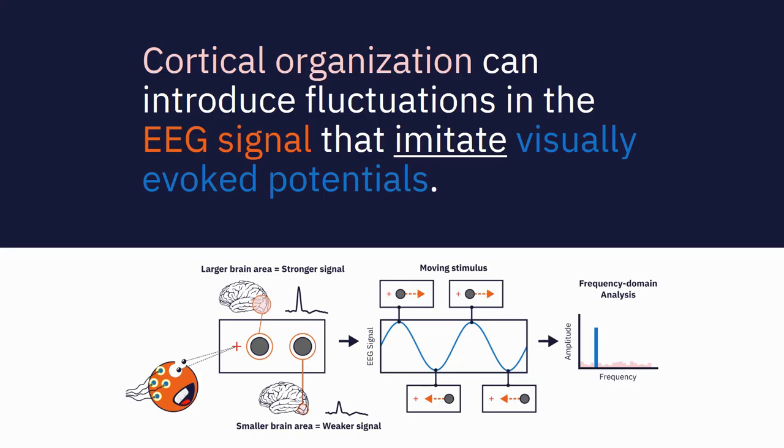A periodically modulated stimulus property can introduce periodic fluctuations in the EEG signal by modulating the activity of neural populations. We asked whether such periodic fluctuations can be introduced by factors other than modulated neuronal activity, such as cortical organization.